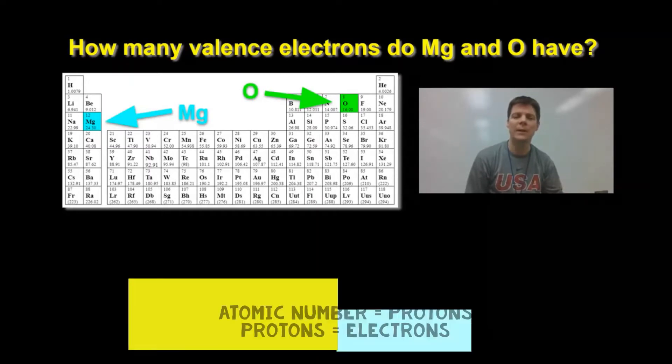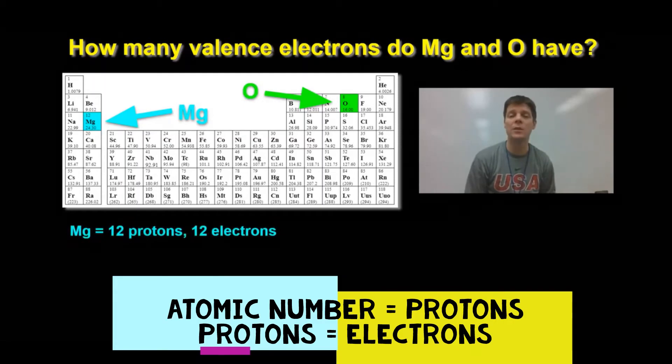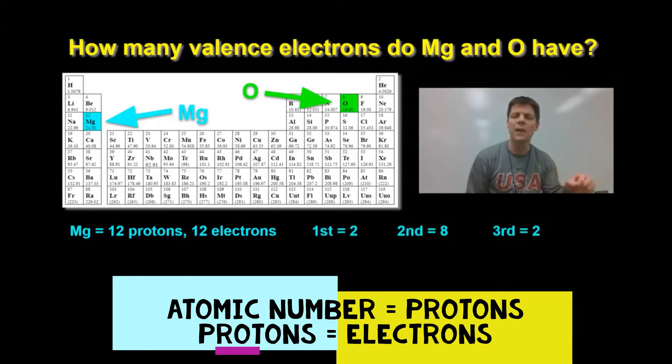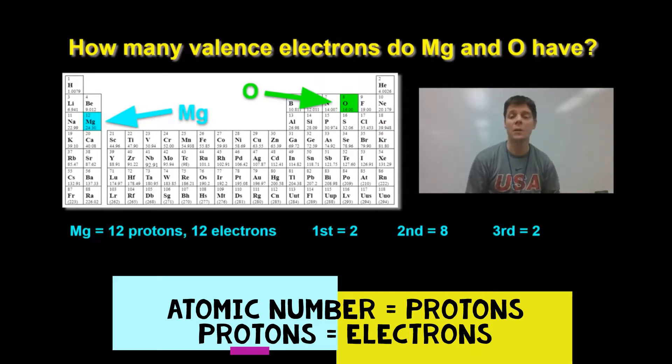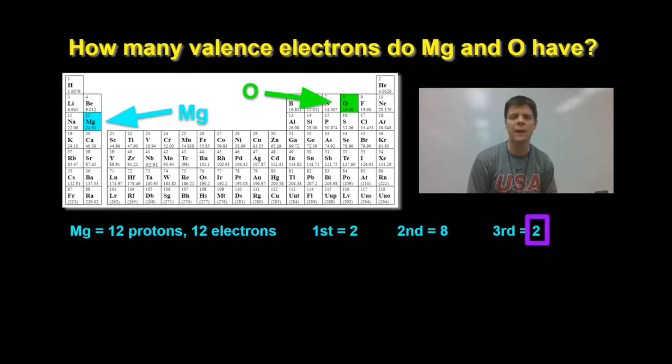Let's talk about magnesium. Because magnesium has 12 protons, it also has 12 electrons. These electrons are distributed in the first, second, and third energy levels. The first energy level has 2 electrons. The second energy level has 8. The third energy level has 2 electrons. This means that magnesium atoms have 2 valence electrons.